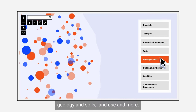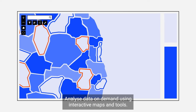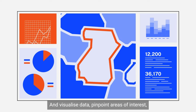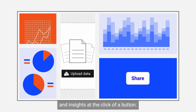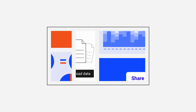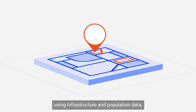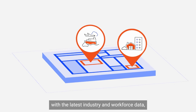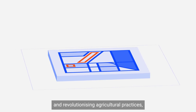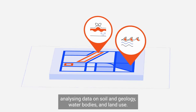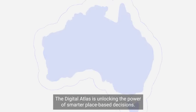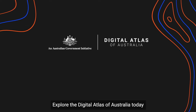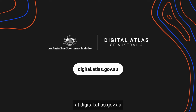The Digital Atlas covers Australia's geography, people, economy, and the environment using location as the connecting thread. Explore data by theme like transport, geology and soils, land use, and more. Analyze data on demand using interactive maps and tools, visualize data, pinpoint areas of interest, upload data, and share information and insights at the click of a button — from optimizing planning and investment to identifying business opportunities and revolutionizing agricultural practices. Explore the Digital Atlas of Australia today at digital.atlas.gov.au.